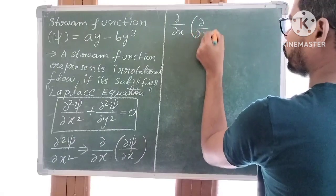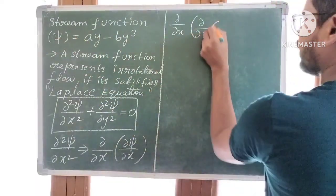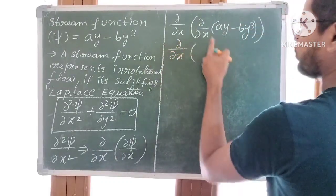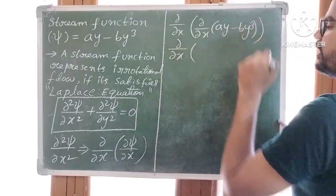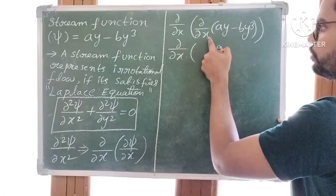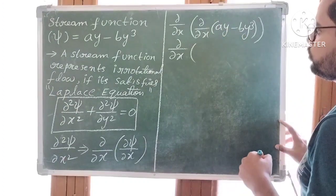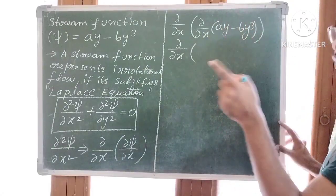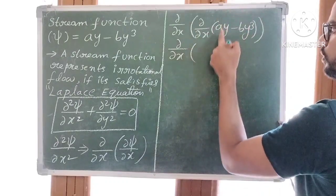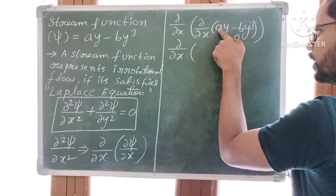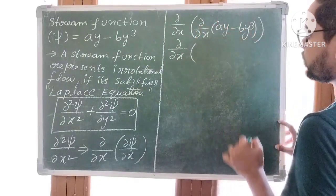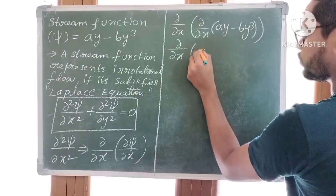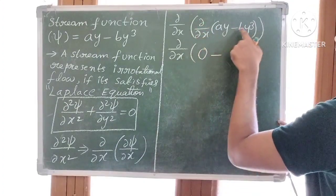Again, ∂/∂x of what is Ψ? So here Ψ is Ay minus By³. So ∂/∂x of (Ay minus By³). Here we are doing partial differentiation with respect to x, so all other terms become constants. So ∂/∂x of Ay — here A and y are constants, so Ay is a constant term. The derivative of a constant is 0. So 0 minus ∂/∂x of By³.